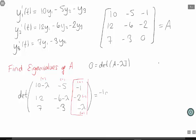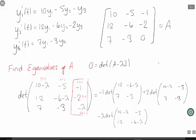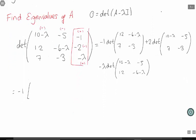This will be minus 1 times the determinant of 12 minus 6 minus lambda, 7 minus 3. Now I'm going to add 2 times the determinant of what I get when I delete its row and column. And finally I'm going to take the determinant of what I get when I delete the row and column of lambda.